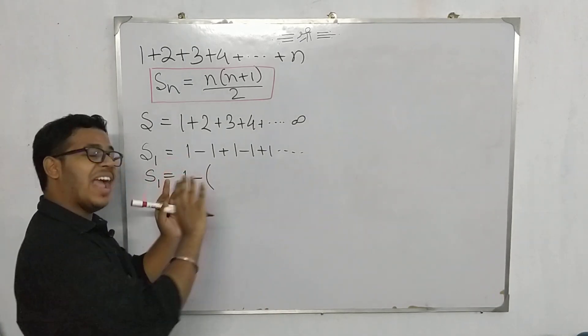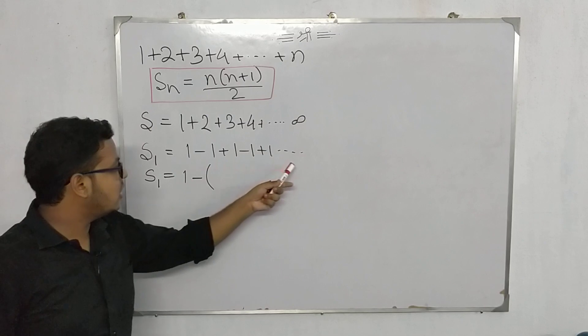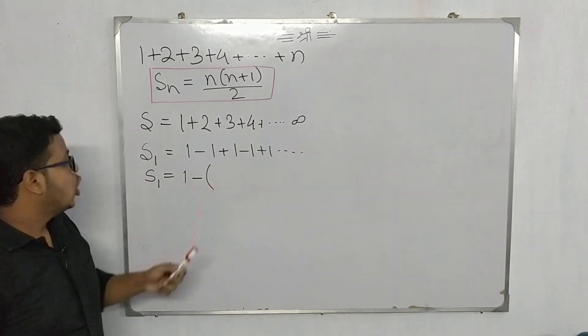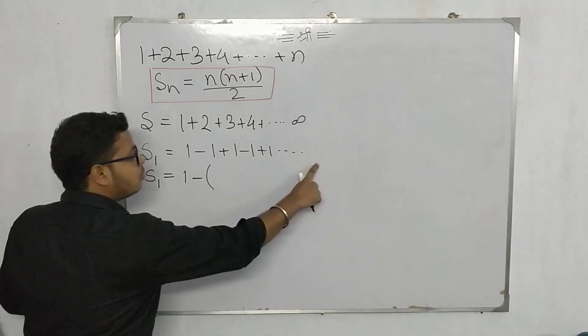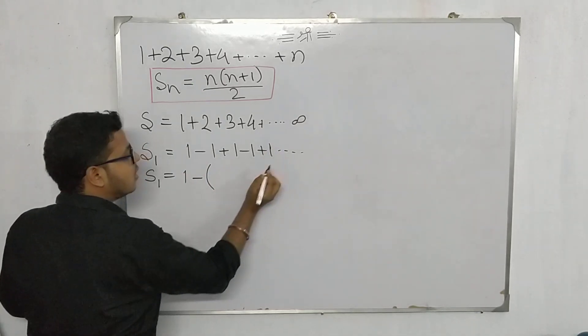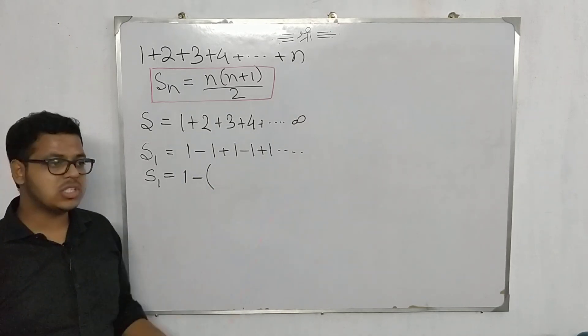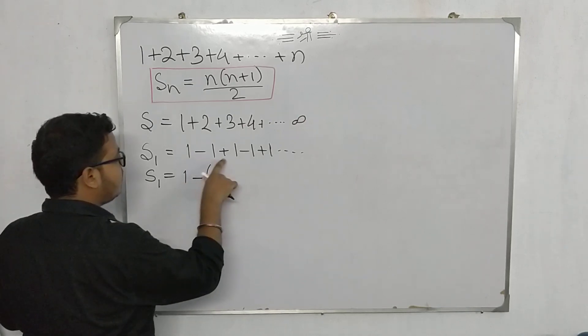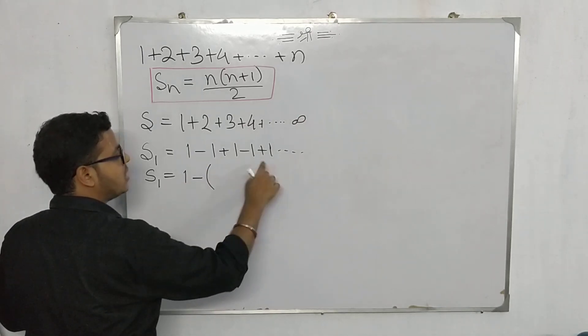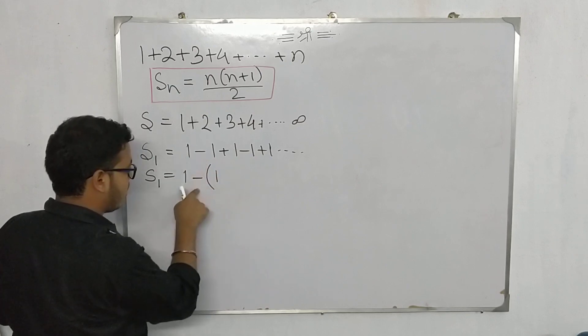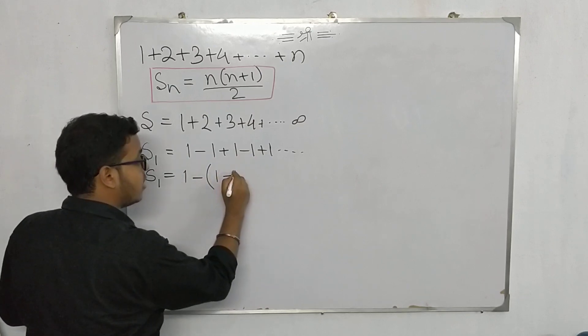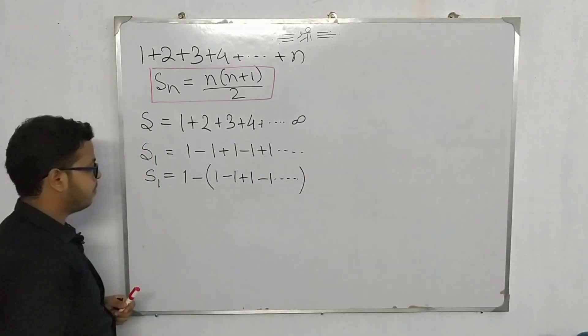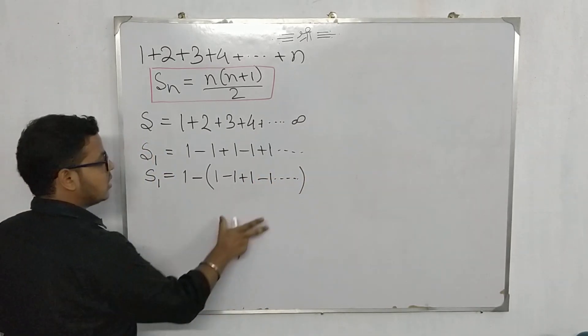So s₁ can be written as 1 minus... we take one term out. This is a complete series of infinite terms. Out of that we are taking just one term out, so the rest of the terms will still be infinite, because infinity minus one term will still have infinity. We are taking -1 common from these terms, so this would be 1 because minus is taking out. Then this is -1, this is +1, -1, -1 and so on up to infinity.